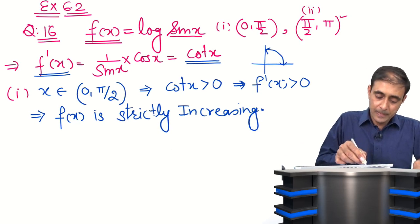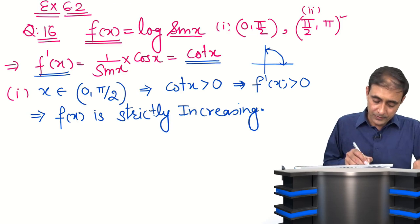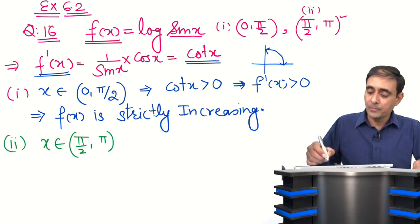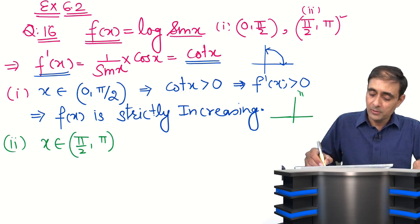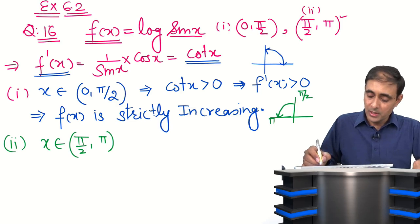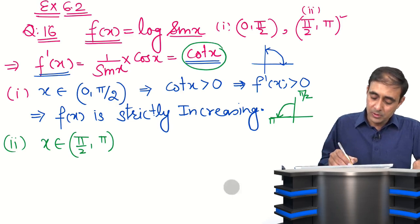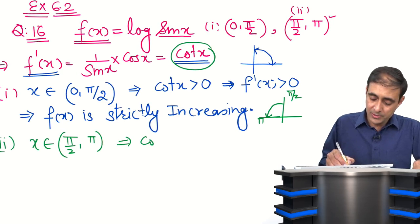For the second part, x belongs to the open interval (π/2, π). The interval (π/2, π) is the second quadrant. And in the second quadrant, cot x is negative — cot x is less than 0.